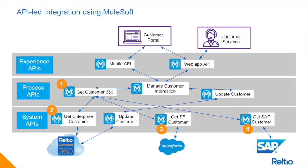For example, if I wanted to get a complete customer 360, I'll have a process API whose purpose is to gather the data from their respective systems, organize it, and then send it back to the experience API in order to be utilized. The first point in that journey will be to go to Raltio and understand who the customer is.